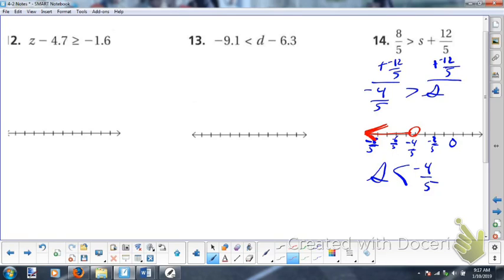Now, you should also get in a routine of checking your answer. I see over here that zero is not in my graph. My graph does not include zero. So zero should not work. So I'm going to try it up here, put a zero up here. Negative four-fifths is greater than zero. Not true. It's less than zero. So I got this right. I didn't go the wrong way.